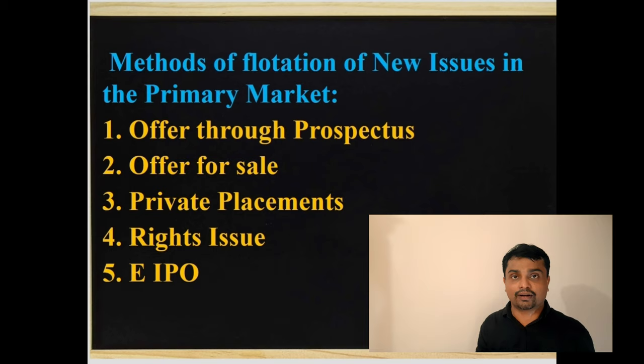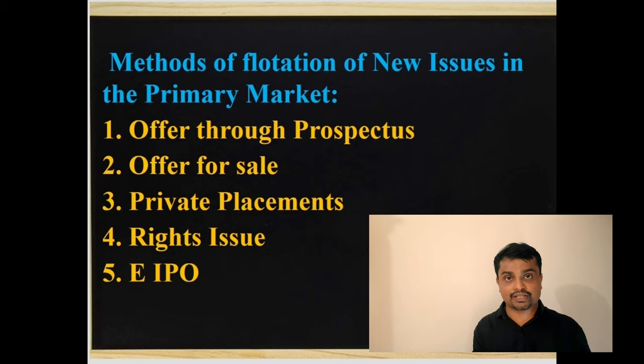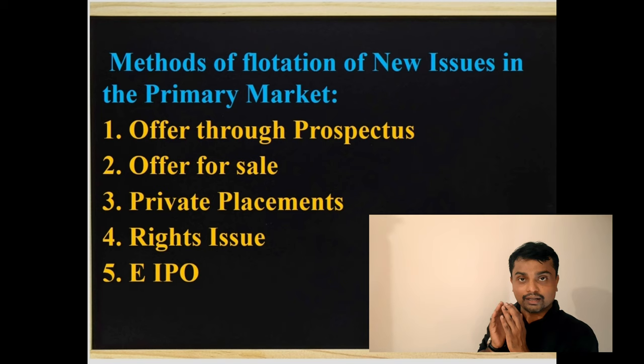The fifth and final method is EIPO. This is the latest method generally used by most companies, and it involves issuing securities through the online system of stock exchanges. So these are the five methods of issuing new shares into the market.